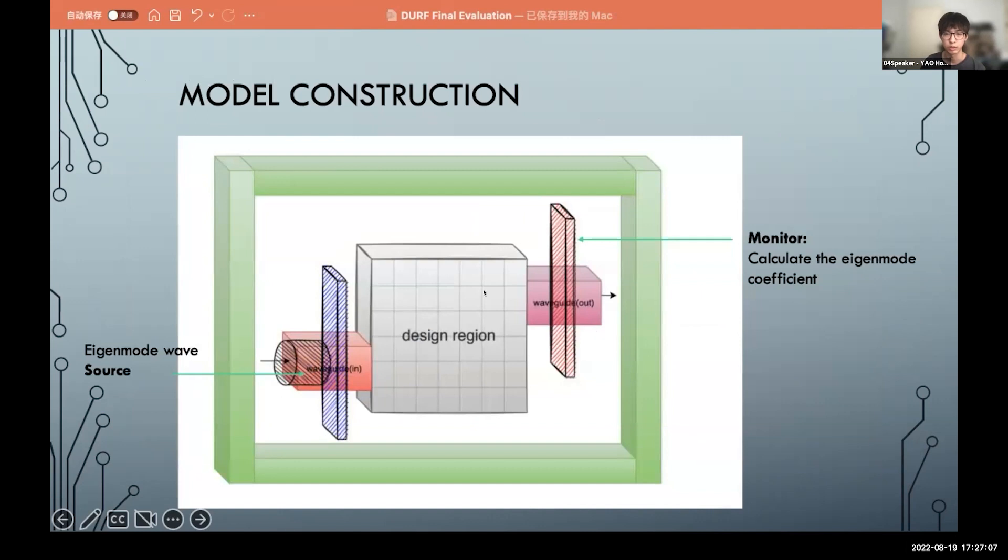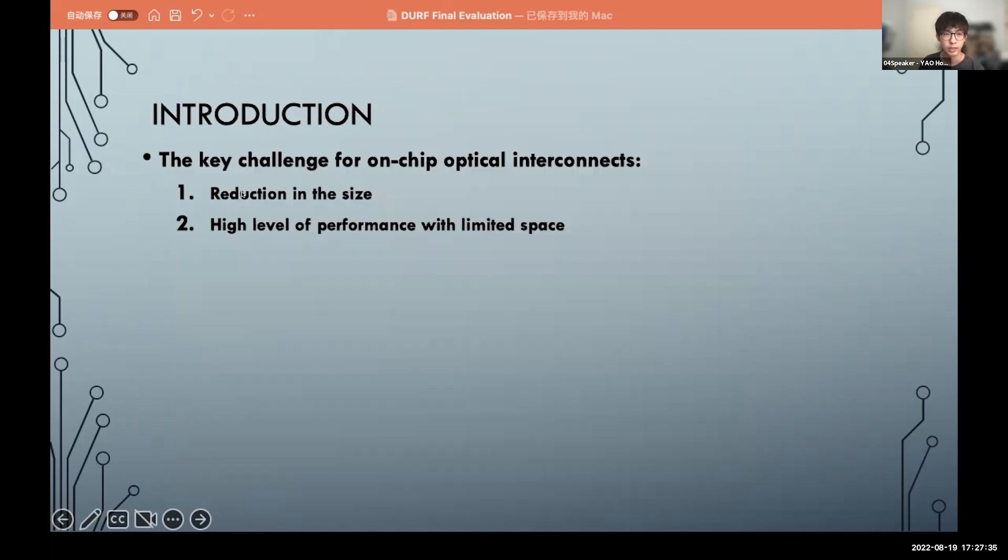And here is the model construction. Here is an input waveguide, here is an output waveguide. The EM wave will go into this waveguide and out of this waveguide. The main part is our design region. It will include the waveguide and it should look like this to transmit the EM waves.